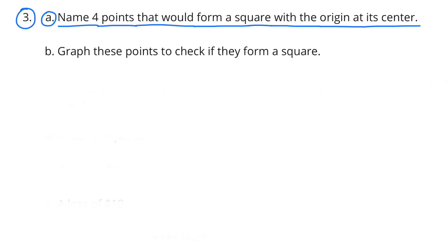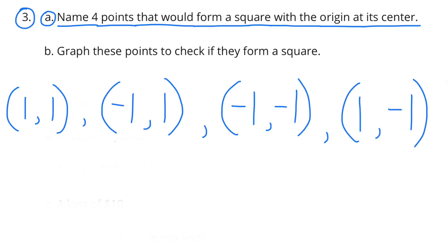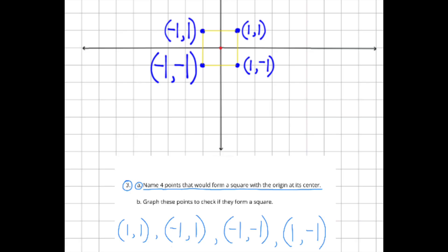Number three a: name four points that would form a square with the origin at its center. The coordinates for those four points would be (1, 1), (−1, 1), (−1, −1), and (1, −1). By the way, this is just one example of how you could form a square with an origin at its center. I placed a tiny red dot at the center where the origin is and plotted each of the points with their coordinates labeled.